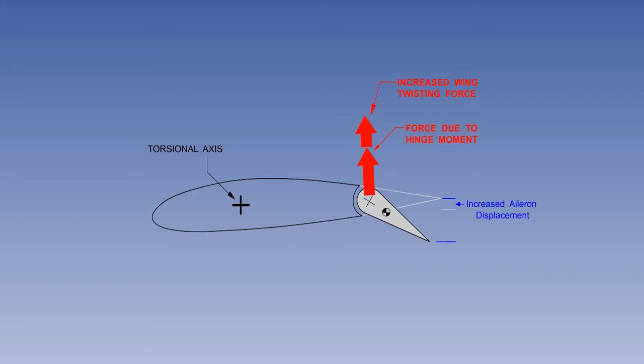Eventually, the rate of wing twist will decrease and the aileron will start to catch up with the twisting wing, and then the whole process will reverse and become divergent.